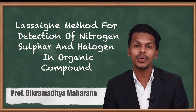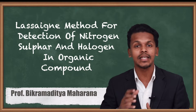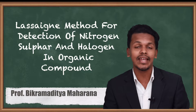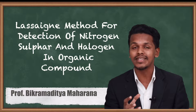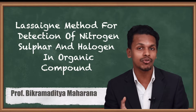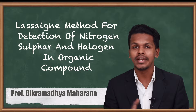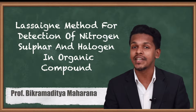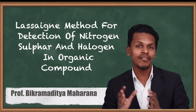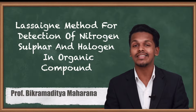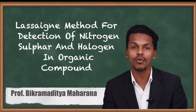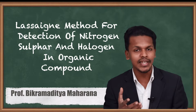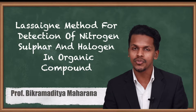Based on that, we are now going to do qualitative analysis of elements such as nitrogen, halogen, and sulfur that could be present in the organic compound. For this we have a method known as Lassaigne's method for the detection of nitrogen, sulfur, and halogen in the organic compound.